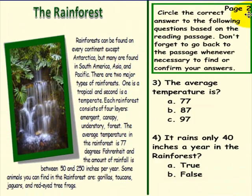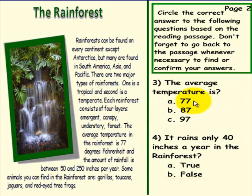Page 2. Please do not pick up a pen until you are asked to do so. Circle the correct answer to the following questions based on the reading passage. Question 3: The average temperature is 77, 87, or 97 degrees Fahrenheit? Question 4: It rains only 40 inches a year in the rainforest — true or false? If you would please pick up a pen to answer these two questions.